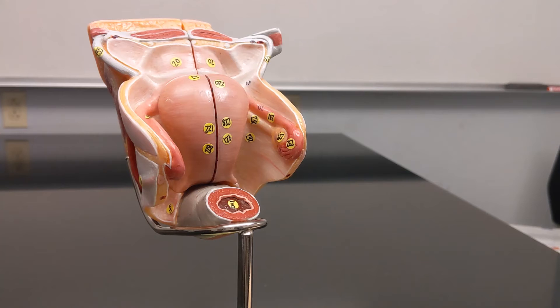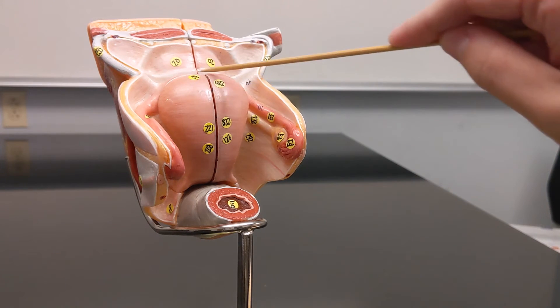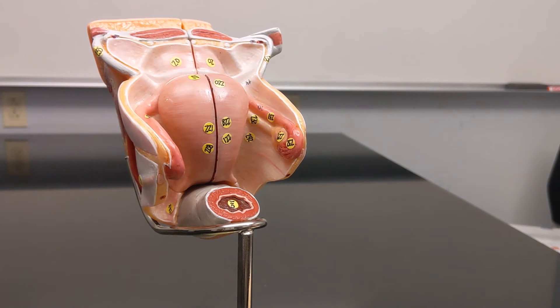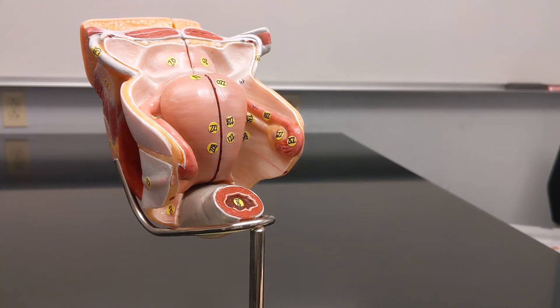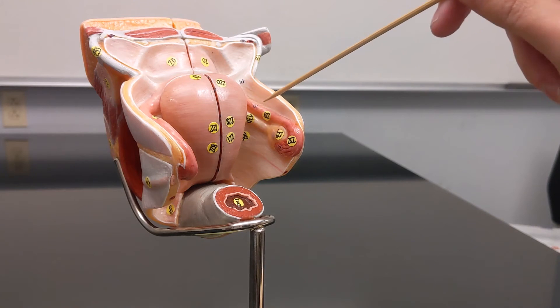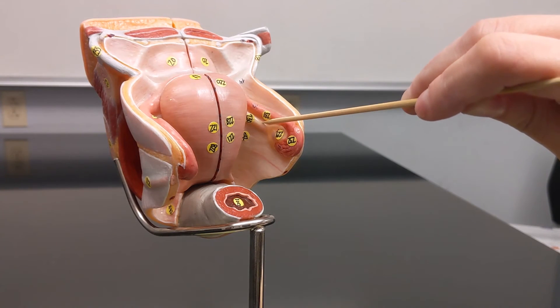Now we're looking at a more superior view so to help orient you this is the bladder, uterus, rectum. So this region of the uterus is the fundus, this is the body. What is this, this, and this? So this is the fallopian tube also sometimes called the oviduct or uterine tube. This is the ovary itself and this is the ovarian ligament.